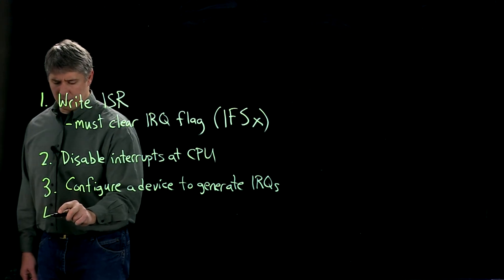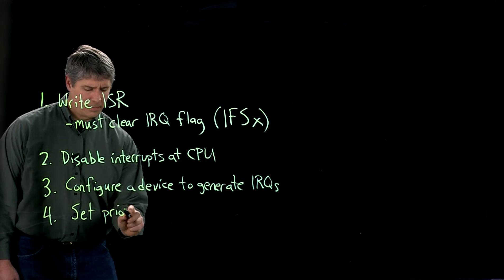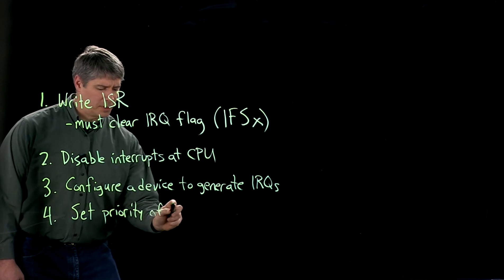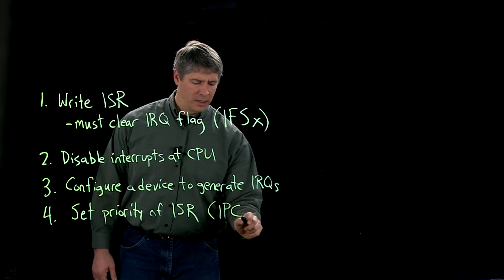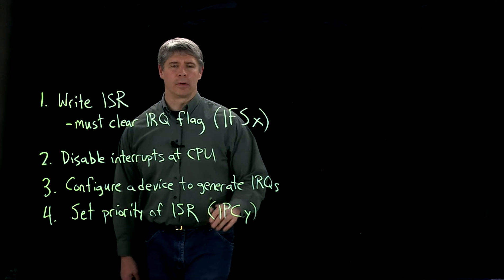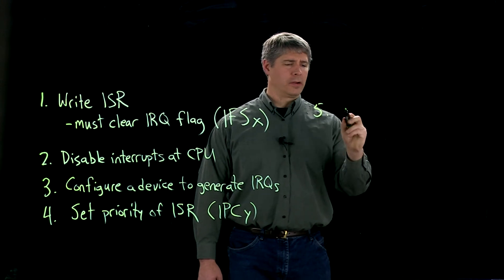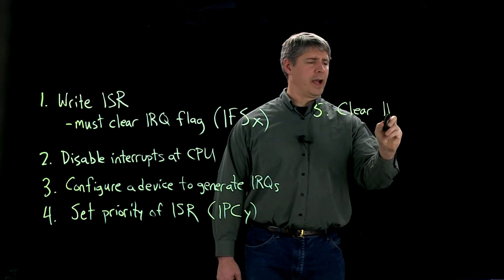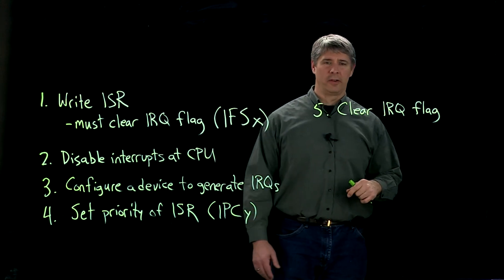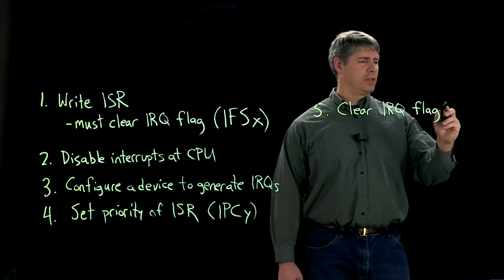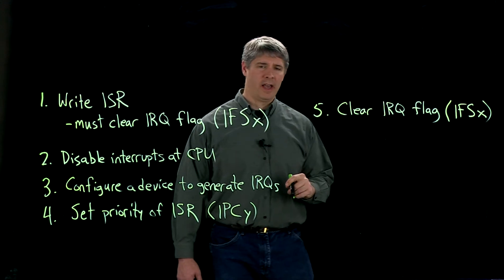The next thing you're going to do is set the priority of the interrupt service routine. To do this, you're going to manipulate bits in the interrupt priority control register Y, where Y corresponds to your particular interrupt. The next step, you're going to clear the interrupt flag just to make sure that the interrupt is not already being requested, by manipulating the appropriate bit to zero of the IFSX register.